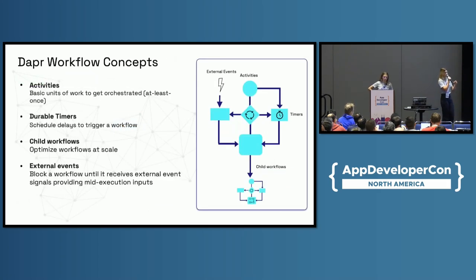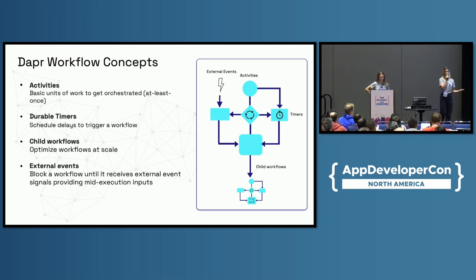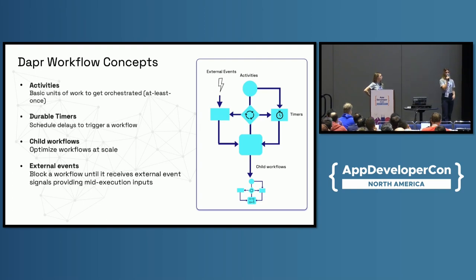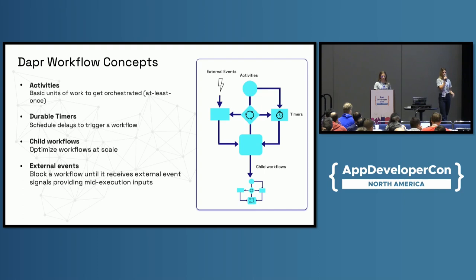Additionally, DAPR workflows includes the concept of durable timers. This can be an arbitrary timeline or reminder up to a year long. Think about a product trial — you let someone in for 30 days and you want that workflow to close out the trial after 30 days. The workflow itself will unload itself from memory while it's waiting for that event to fire or that reminder, and then proceed. So for up to a year, these durable timers allow you to run workflows that are flexible based on timeline.